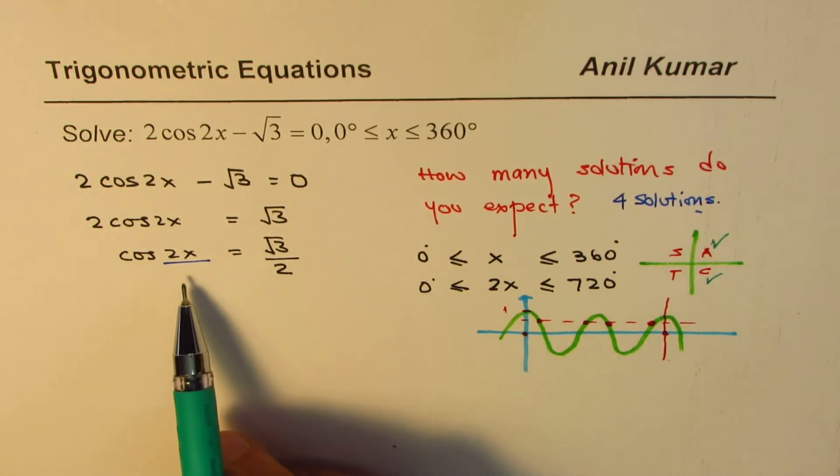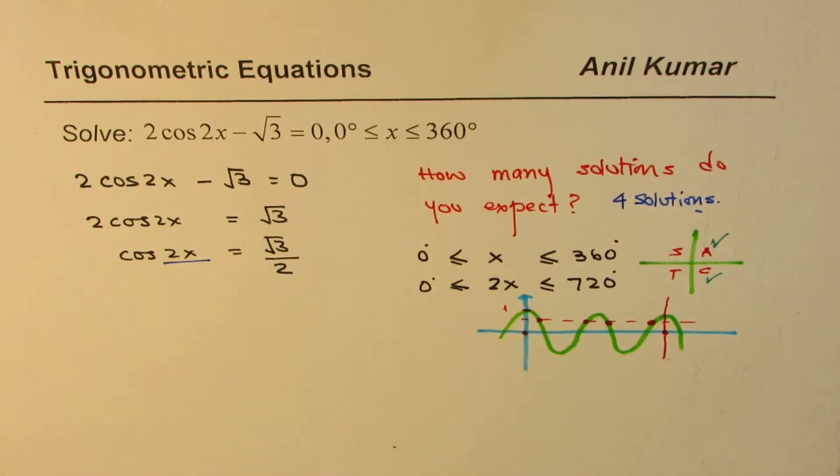How do we find the value for square root 3 over 2? We could use calculator or we could also use special triangles. So let's use special triangles to give the exact solution.